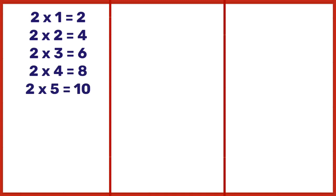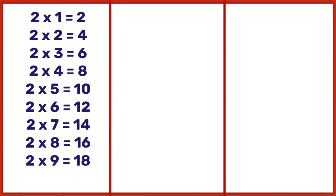2 ones are 2, 2 twos are 4, 2 threes are 6, 2 fours are 8, 2 fives are 10, 2 sixes are 12, 2 sevens are 14, 2 eights are 16, 2 nines are 18, 2 tens are 20.